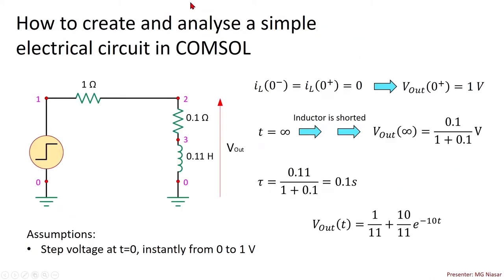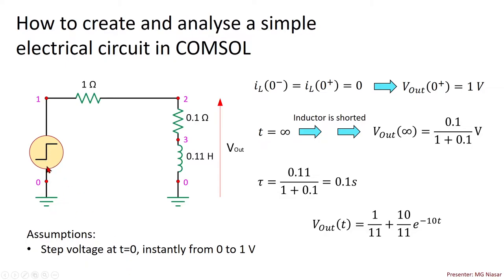So how to create and analyze a simple electric circuit in COMSOL? Let's say we have this very basic circuit. There is a source which is a step function. It has an internal resistance of 1 ohm. And then we connect it to a load which is a resistor and an inductor. The resistor is 0.1 ohm and the inductor is 0.11 Henry. We are interested to find the voltage at the output. The assumption is that this step function is very sharp - it's really a step function at time equal to zero, it suddenly jumps from 0 to 1.